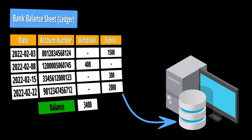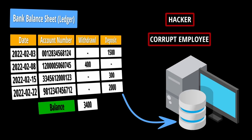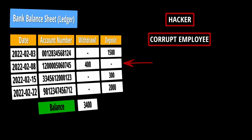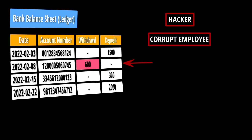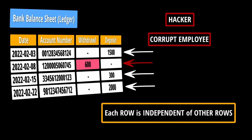Since these transactions are stored in a database, suppose some hacker or corrupt employee gets access to this database and changes a transaction. For example, the withdrawal amount has been changed from 400 to 600, thereby updating the overall bank balance sheet. Sometimes it's difficult to know if the transaction has been hacked and the hacker might get away, because every row here is independent of each other.